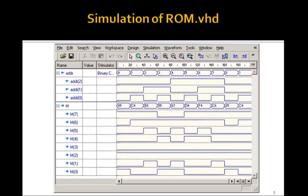And we can simulate it to see that it works. Here's the address 0, 1, 2, 3, 4, 5, 6, 7. And out comes the contents of the ROM 85, C4, E6, and so forth.